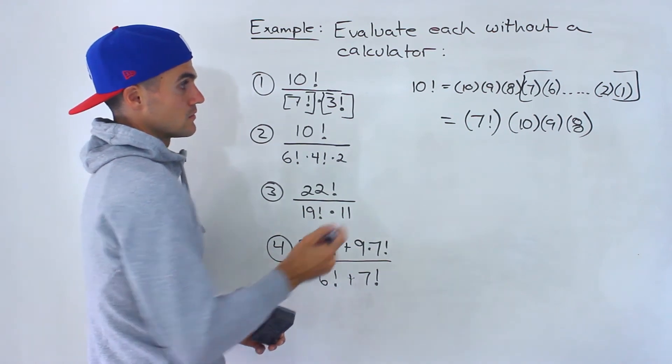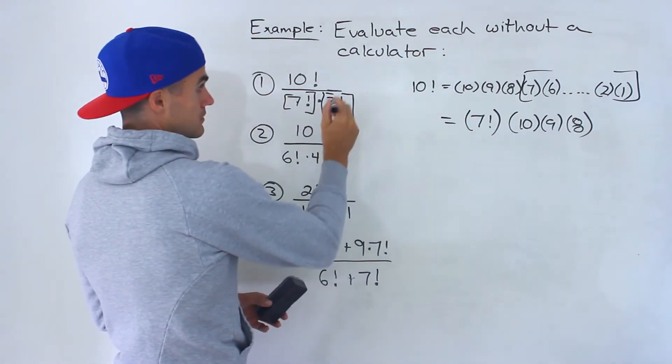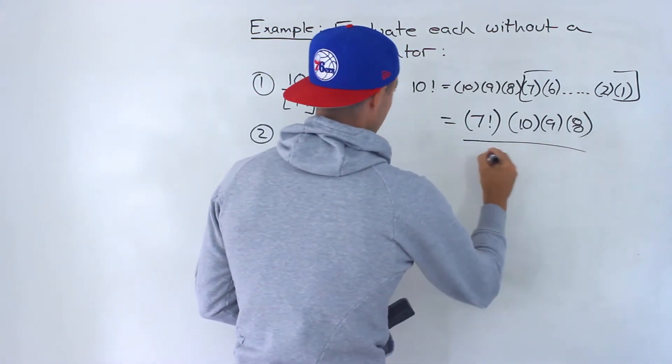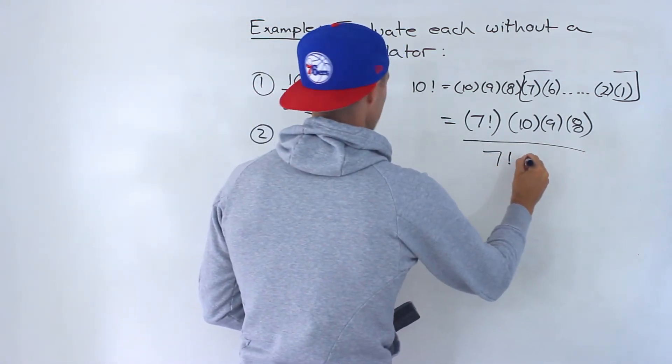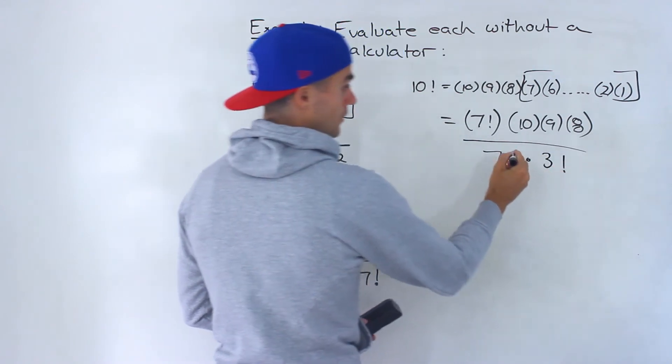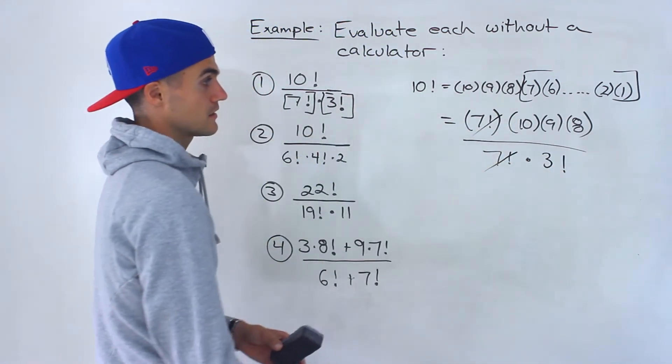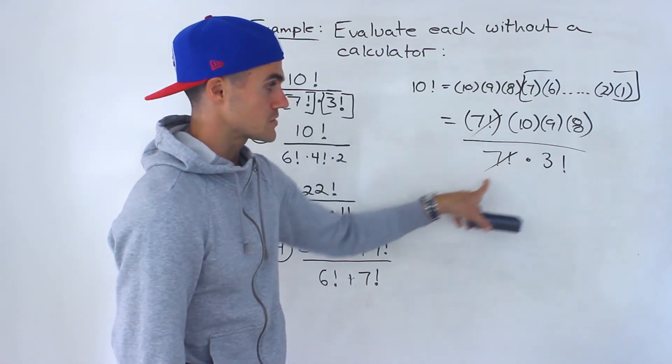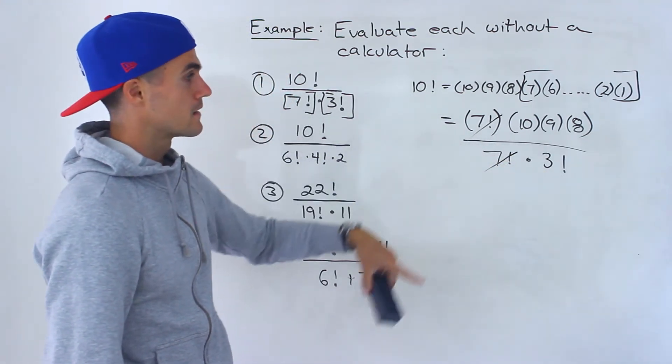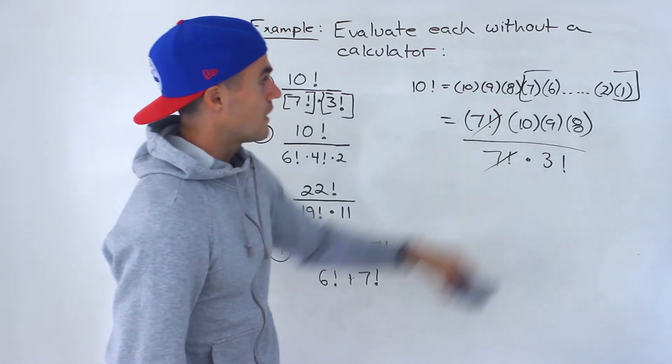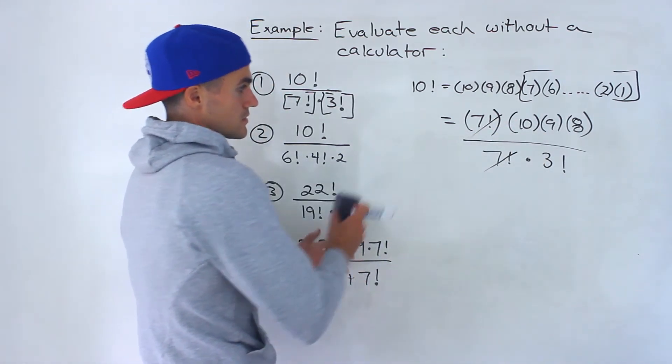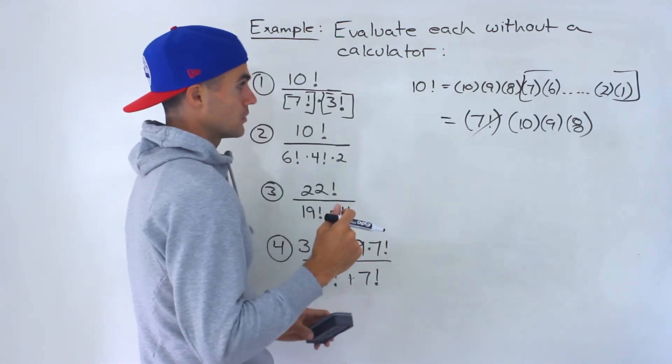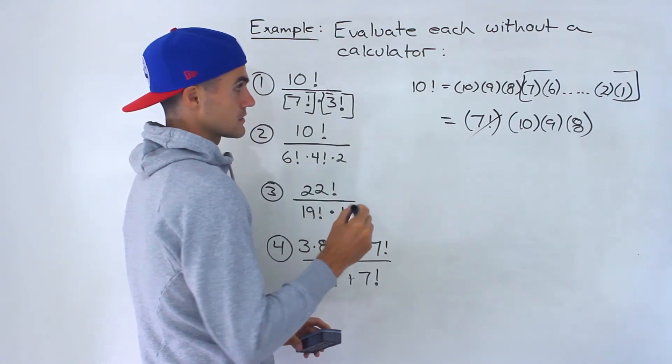So then what would happen? This would be the numerator still over that denominator of 7 factorial times 3 factorial. Notice the 7 factorials cancel out. We'd be left with 10 times 9 times 8 all over 3 factorial, which was the 3 times 2 times 1. Then we can simplify that. So you can factor permutations, factorials as I like to call it.